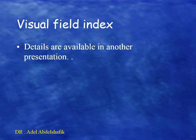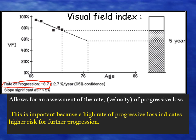Now the visual field index — details about this can be seen in another presentation. It has the advantage of being calculated based on the pattern deviation, so it is not affected by cataract. Also, the sensitivity of the central part is weighted more compared to the periphery. If the visual field index is recorded at least five or six times, you can create a regression line.